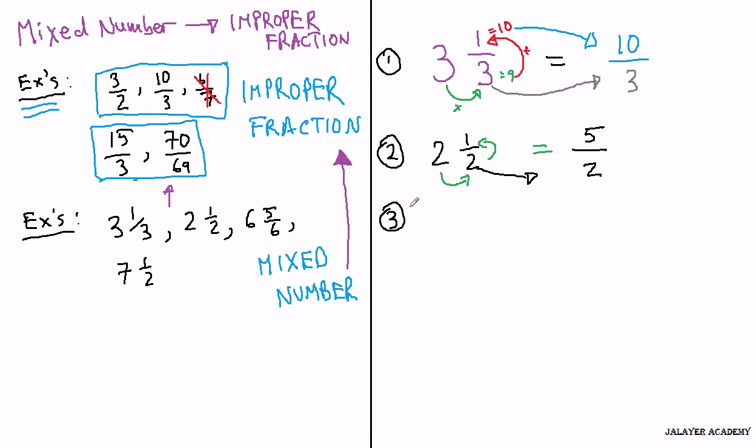Let's do another one. 6 and 5/6. 6 times 6 is 36 plus 5 is 41 over 6.